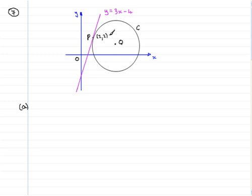But we don't know the gradient. But we do know that the gradient of P and Q is perpendicular to the tangent, the gradient of the tangent. And the gradient of the tangent is 3. Because if you know anything about y equals mx plus c, you'll know that the m value is the gradient and the gradient of the tangent is this m value here, 3. So we'll start off then by saying that the gradient of the tangent, gradient of tangent equals 3.